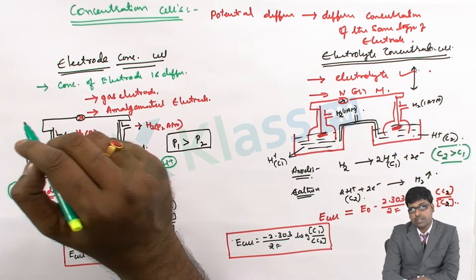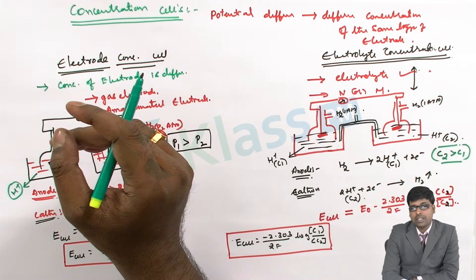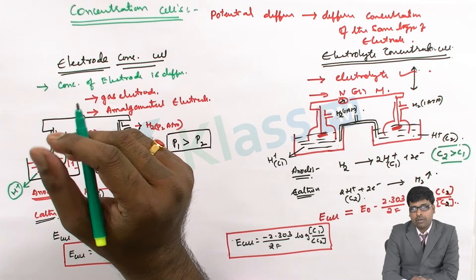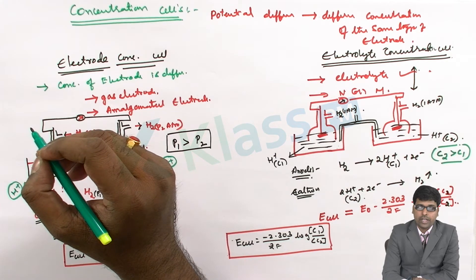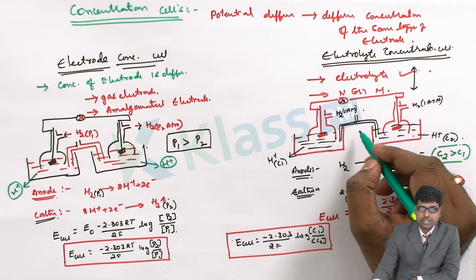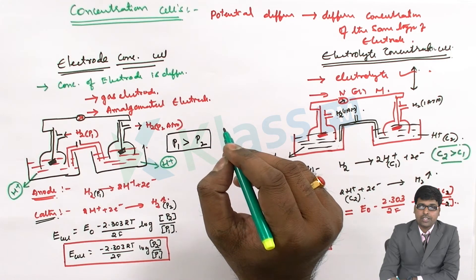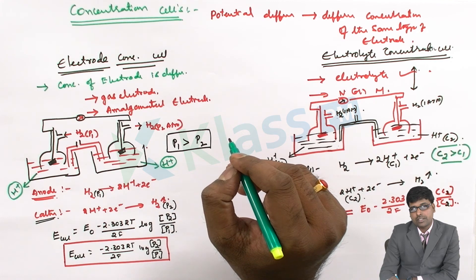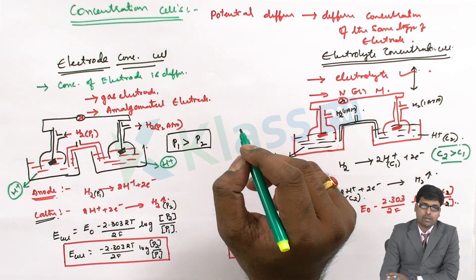Through the salt bridge, ions move from one place to another — anode to cathode or cathode to anode — and there is a chance of development of liquid junction potential at the salt bridge ends, which also drives electrons through the external circuit. Concentration cells with transference have a salt bridge and liquid junction potential is present. Concentration cells without transference have no salt bridge and liquid junction potential is absent. These points are very important for multiple choice questions in your exam.